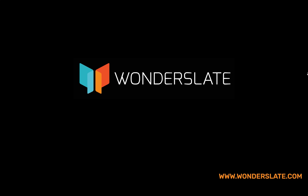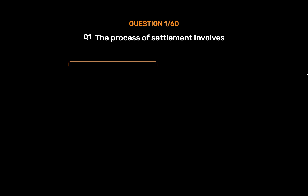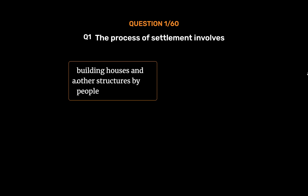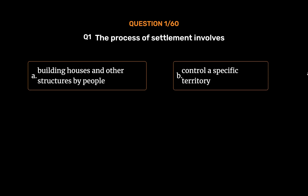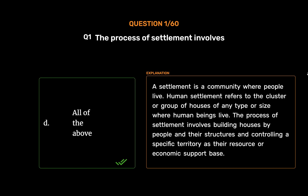Welcome to Wonder Slate. Subscribe to our YouTube channel for more updates. Today's quiz topic is CBSE Class 12 Geography Sample Paper 1. Question number 1: The process of settlement involves — option A: building houses and other structures by people, option B: control a specific territory, option C: control resource or economic support base, option D: all of the above. The correct answer is option D, all of the above. A settlement is a community where people live. Human settlement refers to the cluster or group of houses where human beings live. The process of settlement involves building houses, controlling a specific territory, and using it as a resource or economic support base.